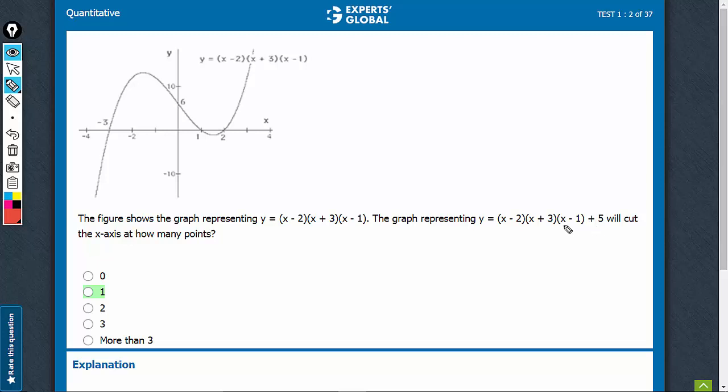When 5 is added to the original graph, what would happen? For any given value of x, the graph will lift itself by 5 points. So, for example,